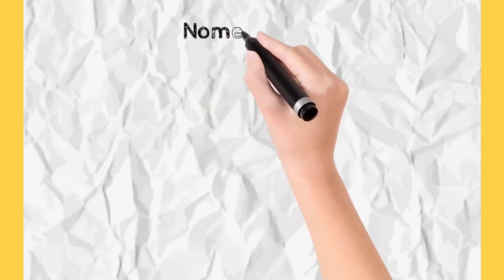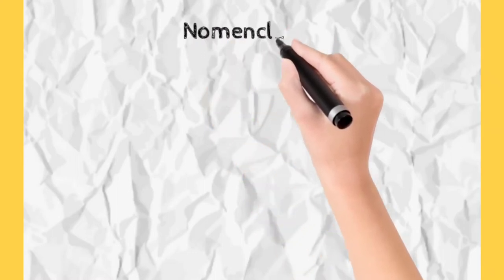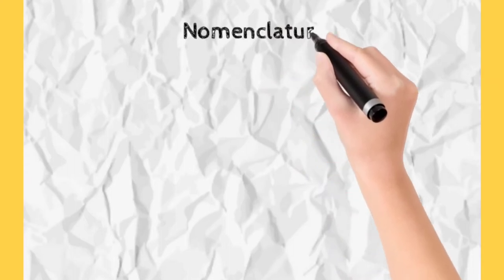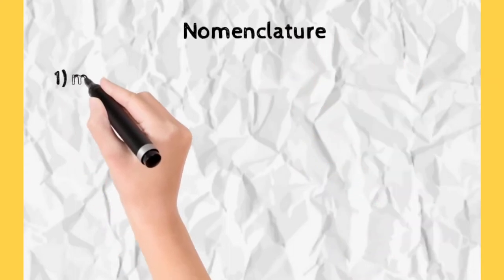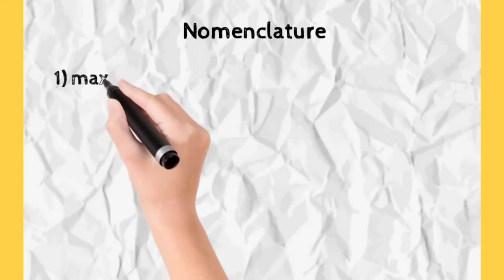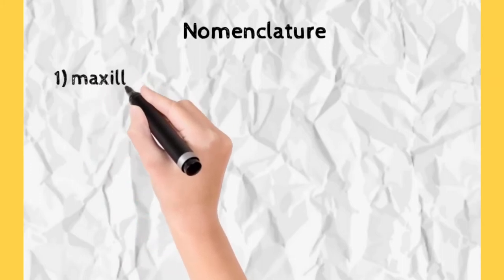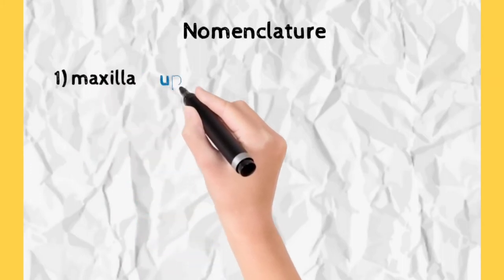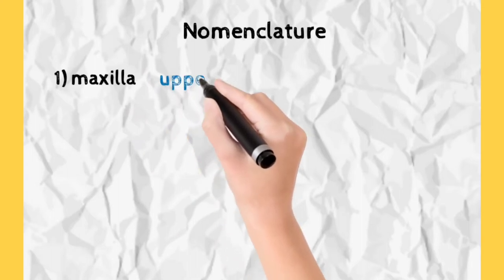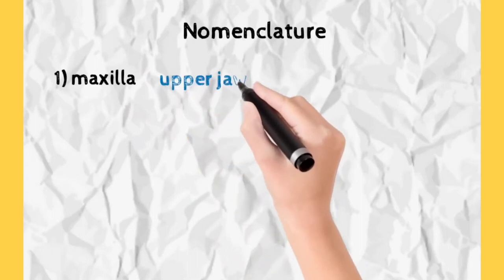Now let's see nomenclature of tooth. In this we will be learning about various basic terms of oral anatomy which are used randomly. So let's start with maxilla. We know maxilla is our upper jaw.